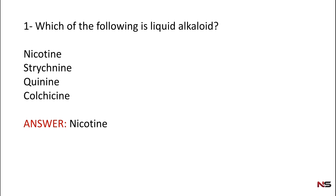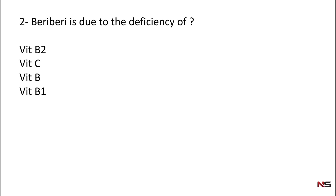Nicotine is a liquid alkaloid and is also volatile. Normally alkaloids are colorless, odorless crystalline solids, but some exceptions exist. Nicotine is a volatile liquid, and conine is also a volatile liquid. Berberine is a yellow-colored alkaloid — normally alkaloids are colorless, but berberine is an exception.